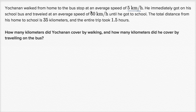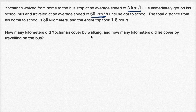Jokinen walked from home to the bus stop at an average speed of five kilometers per hour. He immediately got on his school bus and traveled at an average speed of 60 kilometers per hour until he got to school. The total distance from his home to school is 35 kilometers, and the entire trip took one and a half hours. How many kilometers did Jokinen cover by walking, and how many kilometers did he cover by traveling on the bus?